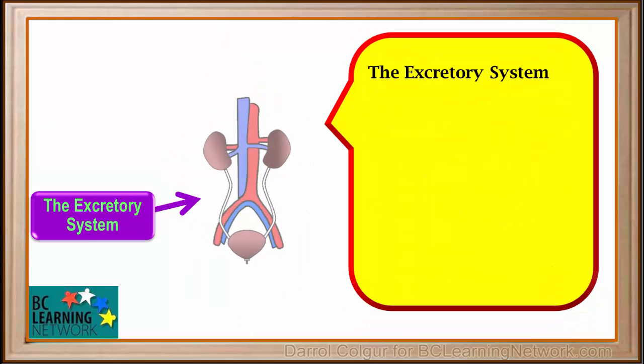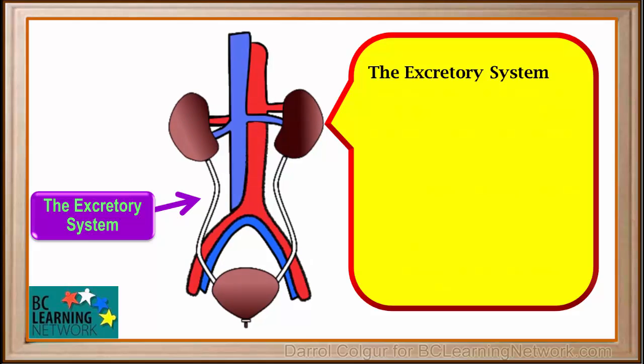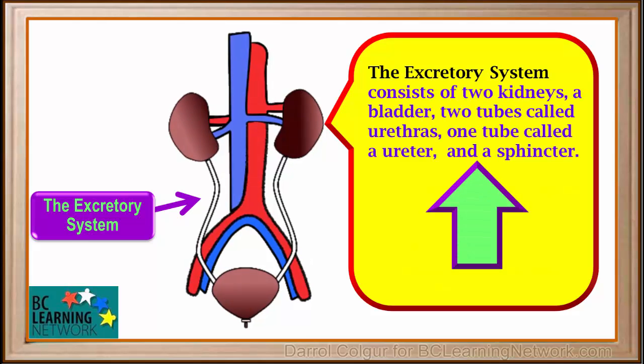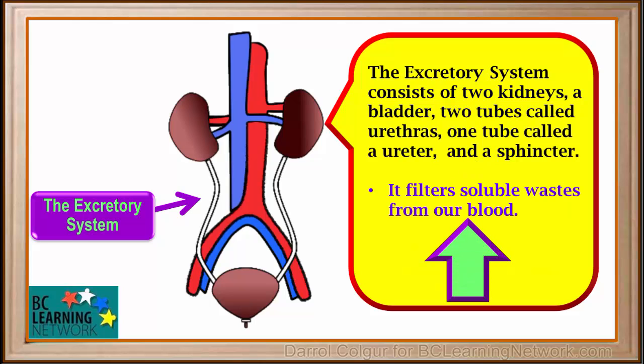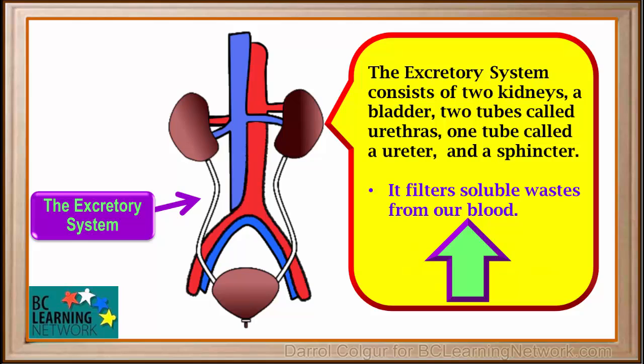The excretory system consists of two kidneys, a bladder, two tubes called urethras, one tube called a ureter, and a sphincter muscle. Its function is to filter soluble waste materials from our blood, and to eliminate these wastes from our body in the form of urine.